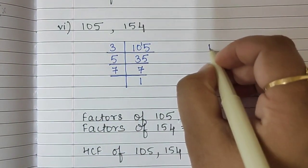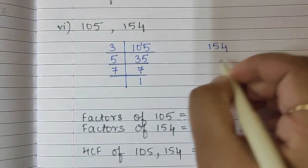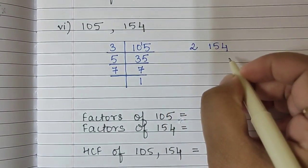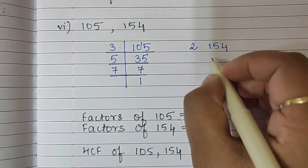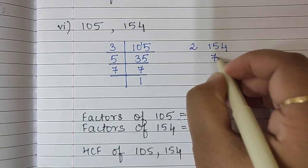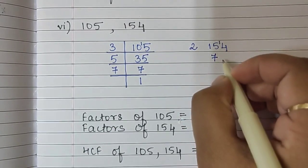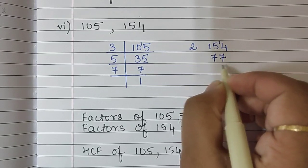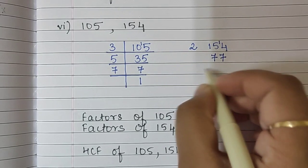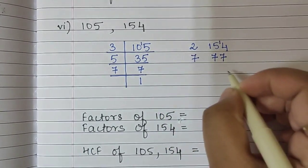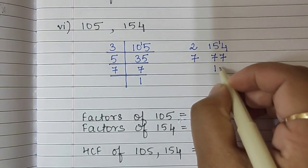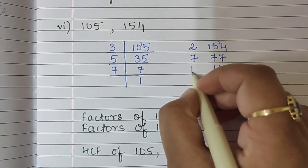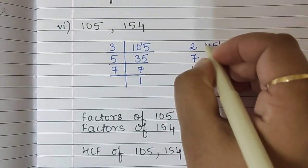Then there is 154. It's an even number, so we begin with 2. 2 seventy-sevens are 154. Now 77 is directly divisible by 7. So we write 7 elevens are 77. And 11 is a prime number, so we write 11 ones are 11.